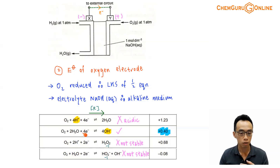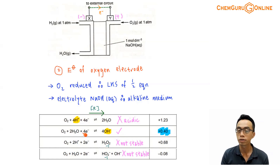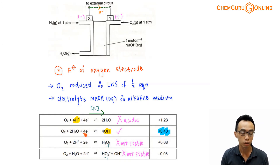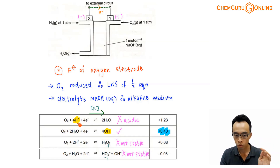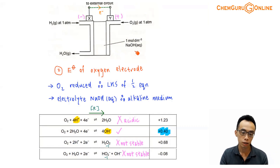We want to consider what criteria to use when choosing the relevant half equation. Keeping in mind that the electrolyte is sodium hydroxide, this is in alkaline medium. When choosing the half equation, we want to use the one where OH⁻ is present. If H⁺ is present, that suggests acidic medium; if OH⁻ is present, it suggests alkaline medium. The first half equation with E-value +1.23V is the reduction of O2 to water, and since H⁺ is present, we would use this only if the electrolyte is acidic — so we will not use this one here.